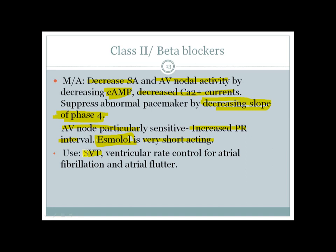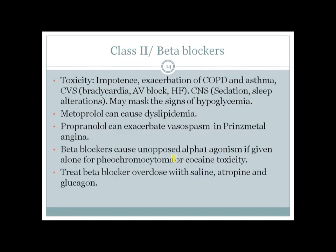Beta blockers can be used for supraventricular tachycardia and rate control in atrial fibrillation and atrial flutter. Important toxicities include exacerbation of COPD and asthma, because non-selective beta blockers block beta-2 receptors in bronchial tissue in addition to beta-1 receptors in the heart, causing bronchospasm.